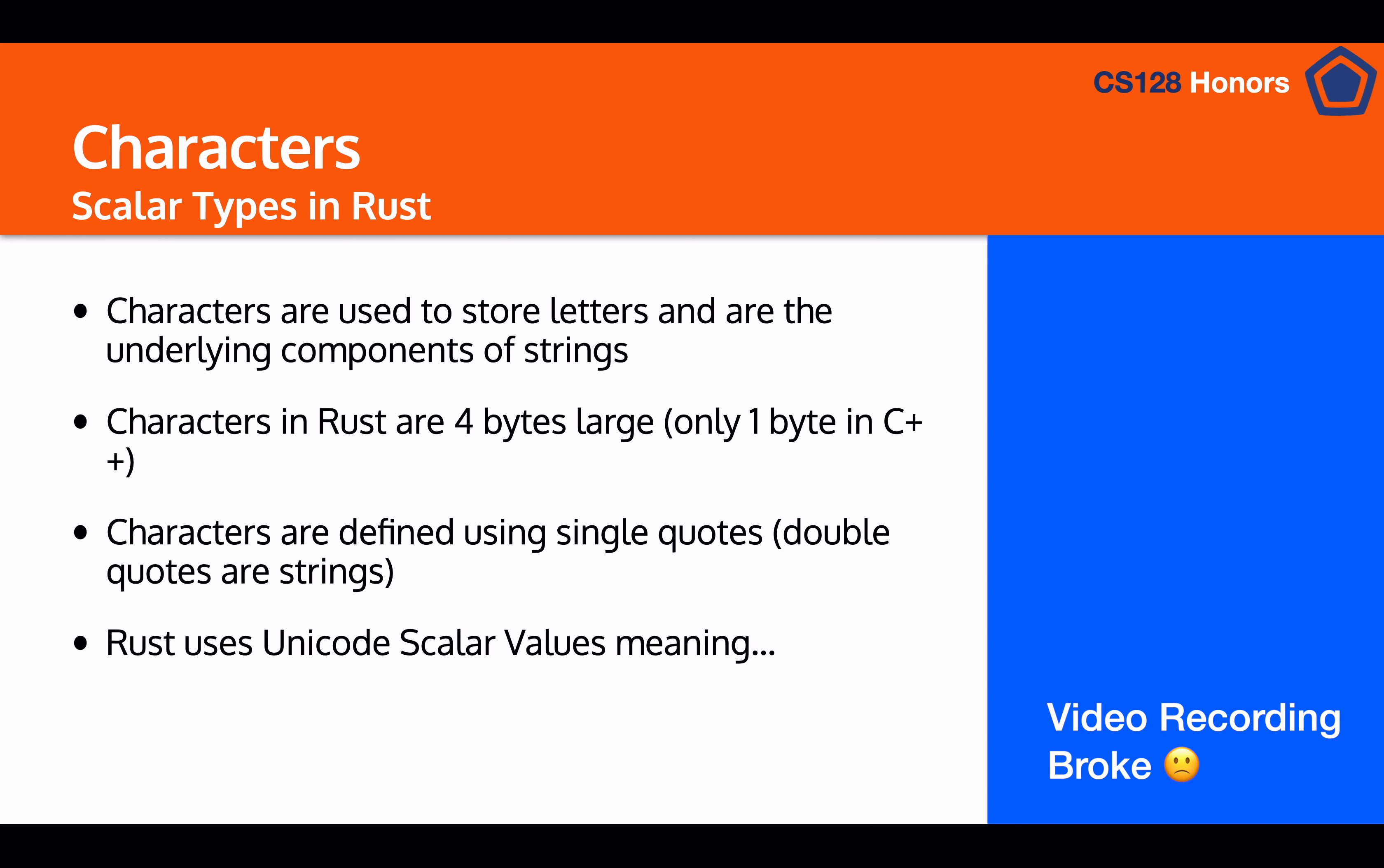Now the reason that Rust is four bytes large is that it uses Unicode scalar values instead of just ASCII, which means that it can support a wide variety of things, not just American text, but also other languages, as well as emojis. Rust is able to fully support emojis because of the fact that it adopts Unicode. And as you can see, we can just declare a character by putting let and then a name equal to single quote and then an emoji or any other character that you want to use.